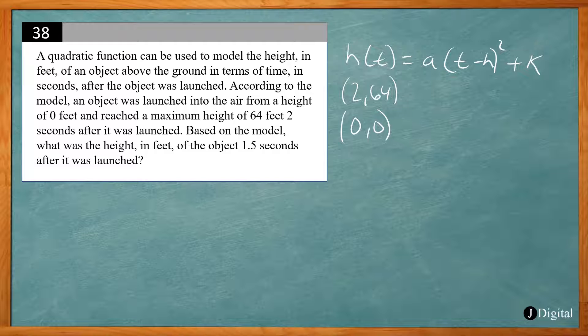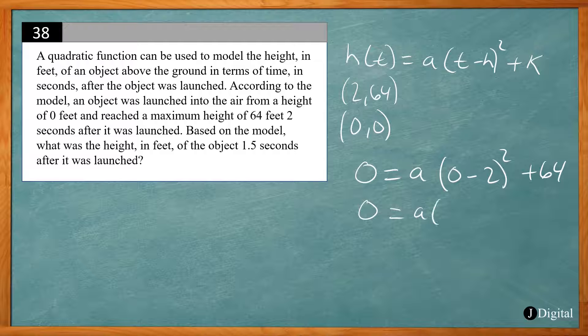So we set up our equation: 0 equals a(0 - 2)² plus 64. Okay, so we're plugging in our (0,0) point, 0 for our time, 0 for our height. We want to solve for a.